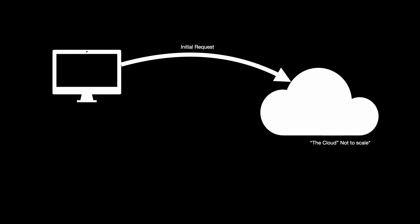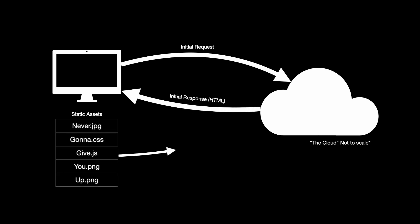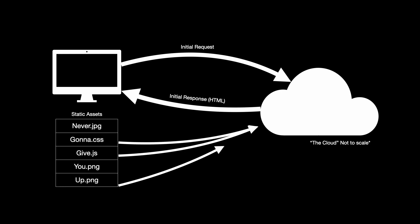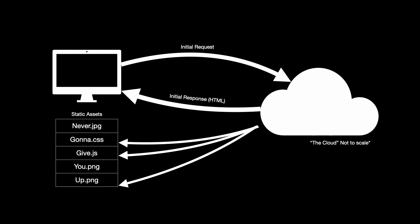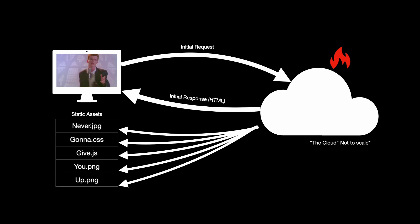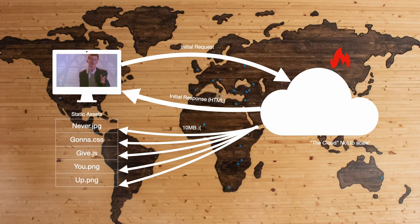Essentially, when your site loads in a browser, all kinds of other stuff like images, CSS files, JavaScript files, and any other static content is fetched behind the scenes. If you don't have a CDN, all this content needs to come from your server. This can put a heavy strain on your server and take a long time to be delivered, especially if the files are large or if they're geographically far away from the machine that's making the request.